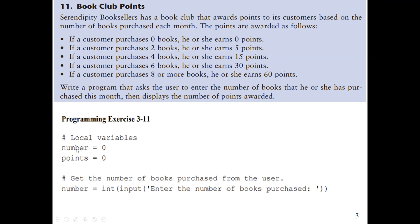We have two variables here. The first variable is 'number', initialized to zero to make sure there's no stray value inside — it will store the number of books the customer buys. Then we have a variable for 'points', which will be the points we are going to award. The first thing we do is ask the user to enter the number of books purchased, using the input function.